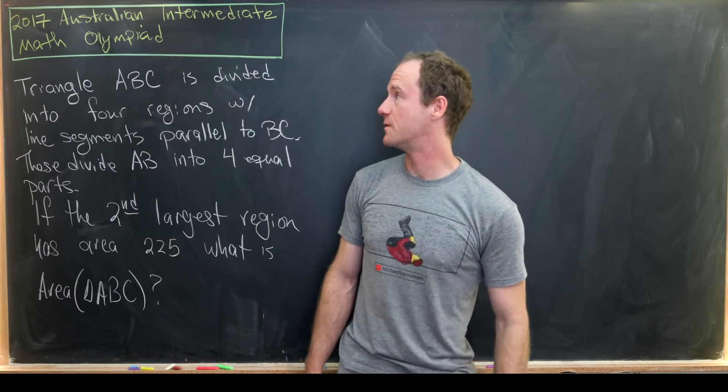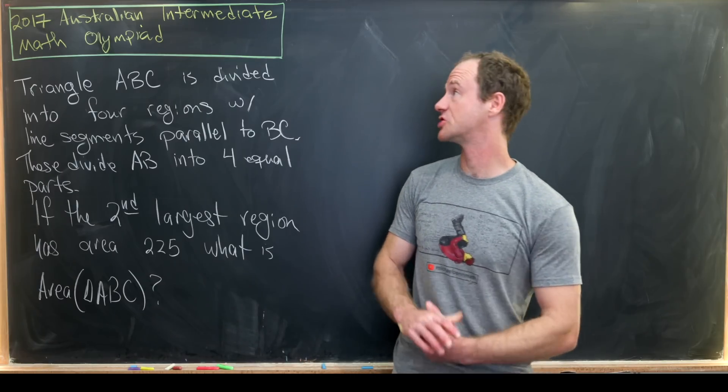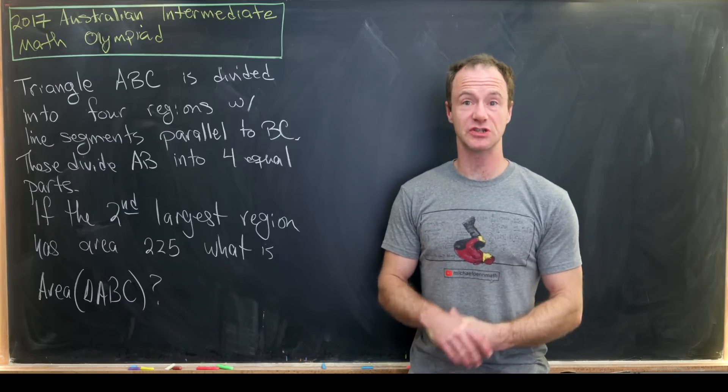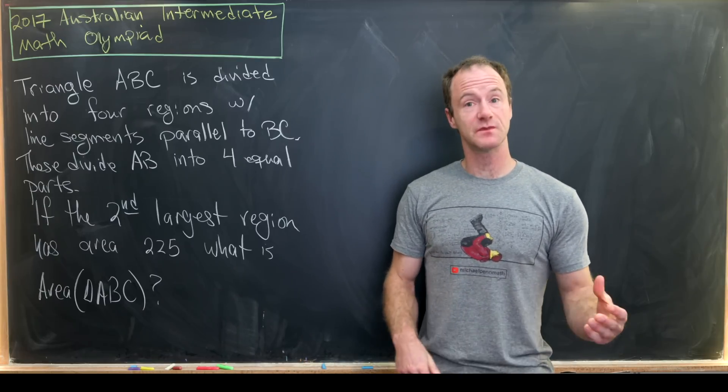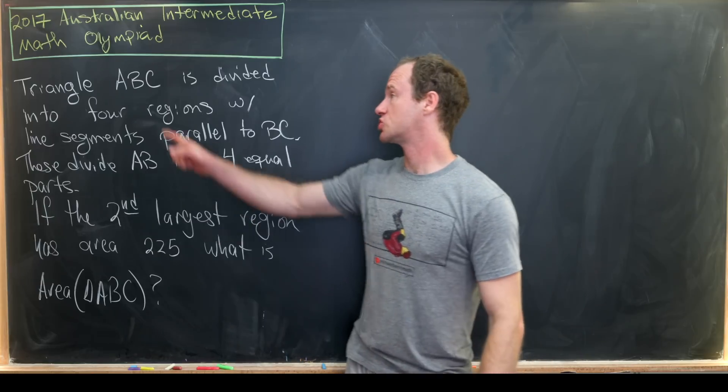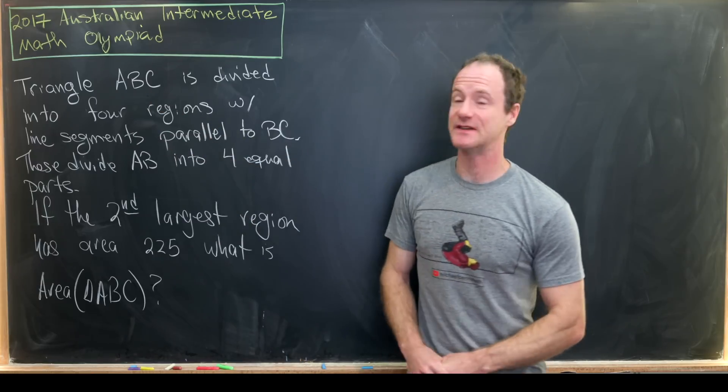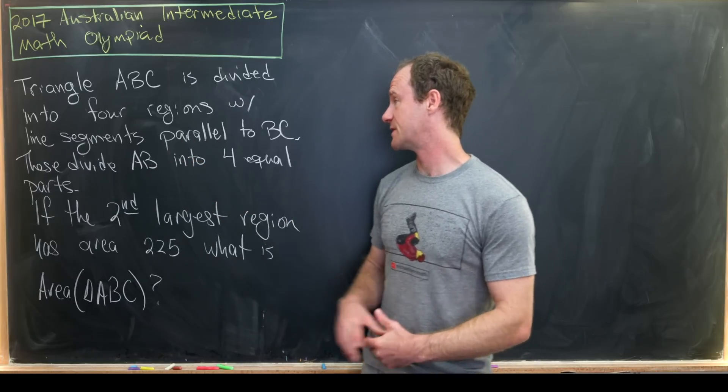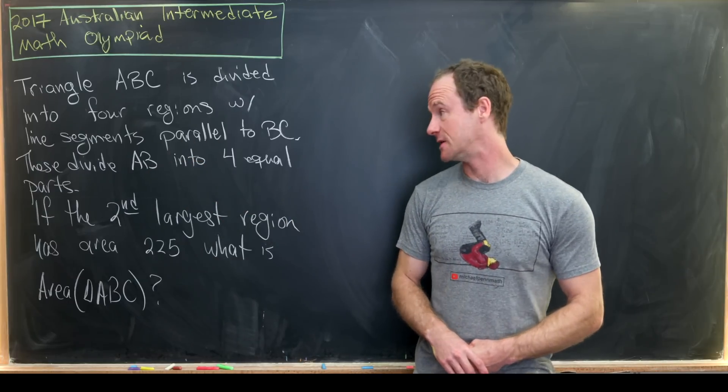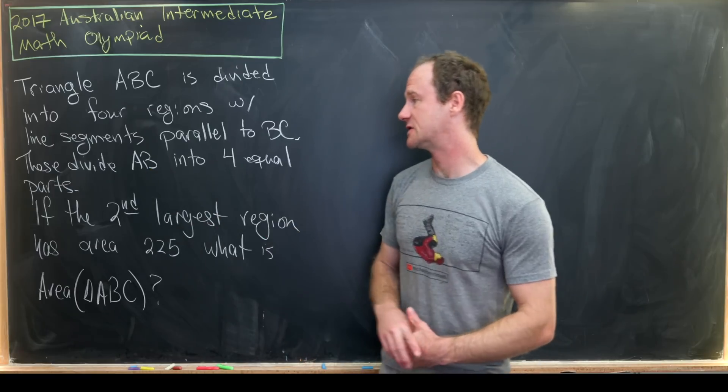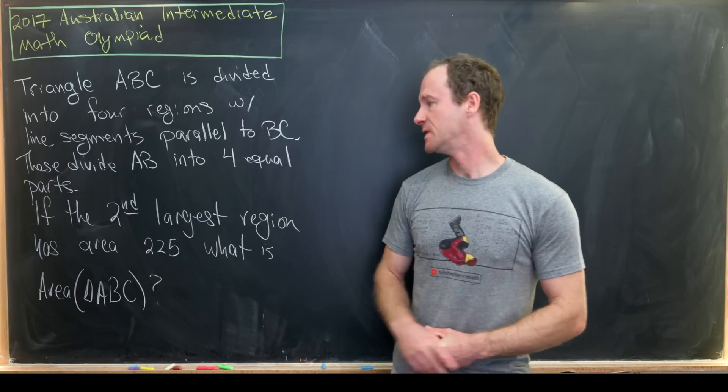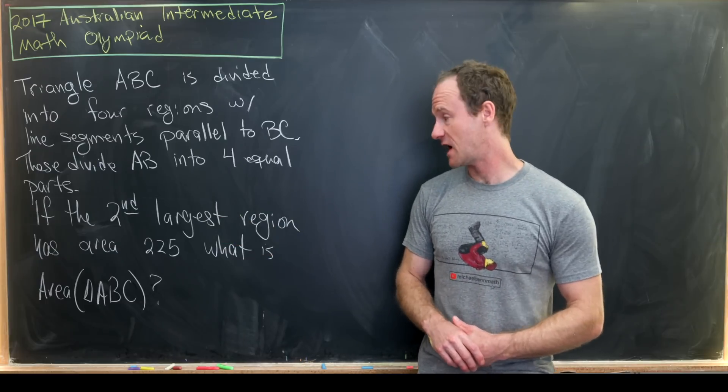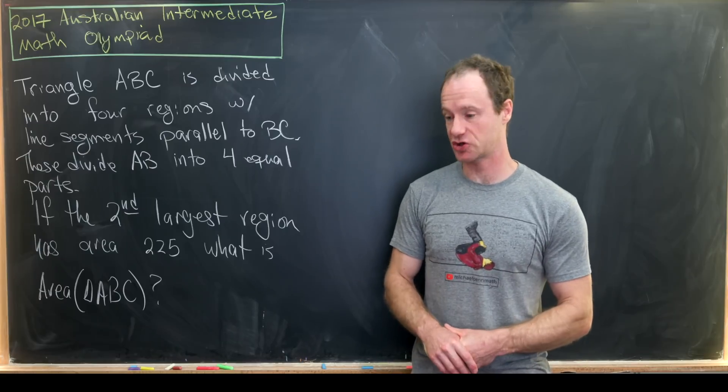Today I've got a nice problem from the 2017 Australian Intermediate Math Olympiad. It's a cool little geometry problem. Triangle ABC is divided into four regions with line segments parallel to BC. These divide AB into four equal parts. If the second largest region has area 225, what is the area of the entire triangle?